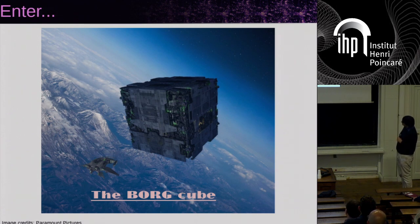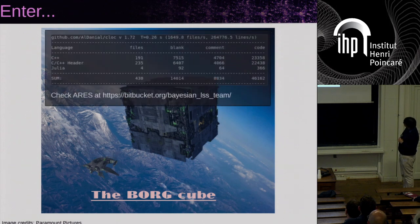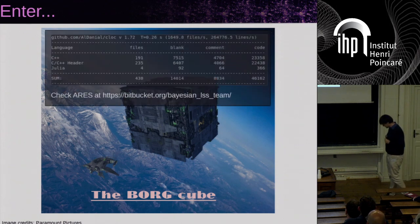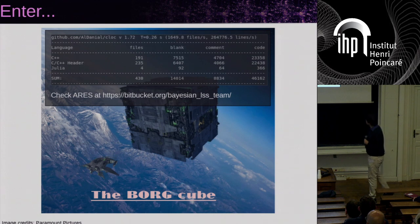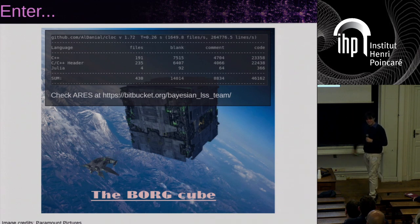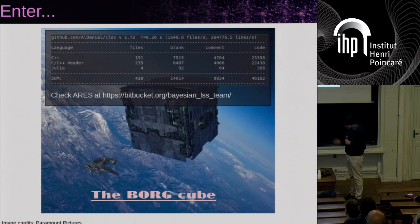Nowadays, the Borg software is growing and it's nearly approaching 46,000 lines of code with parallelization and everything. It starts being a major beast, and the reason is because there are many phenomenologies implemented in it.